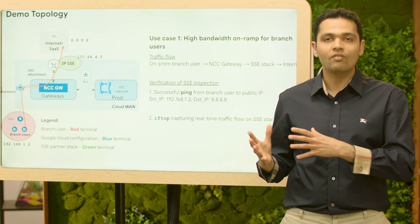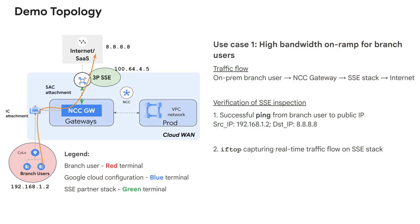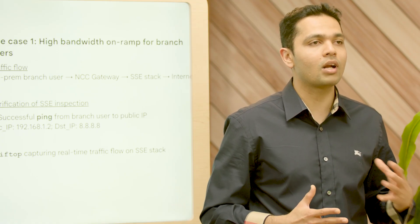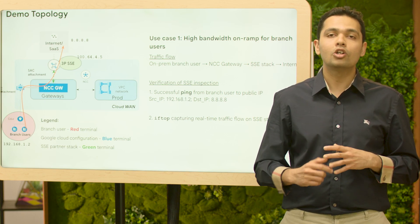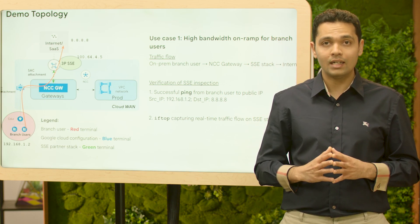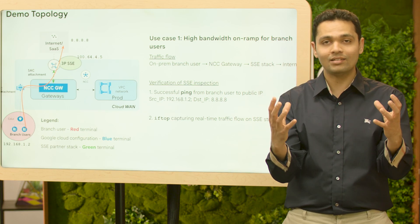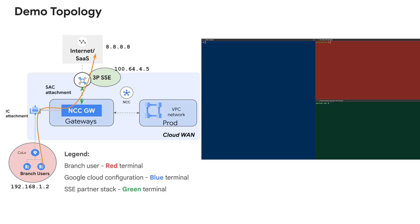In use case one, an on-prem branch user wants to access the internet post-SSE inspection. In this scenario, branch users have no local internet connectivity or breakout — they only have private connectivity over interconnect to Google Cloud. For verification, we will show a successful ping from the branch user's private IP address to the public IP 8.8.8.8, and capture real-time traffic flow and bandwidth on the SSE stack using the Linux iftop command. Let's get into the demo.